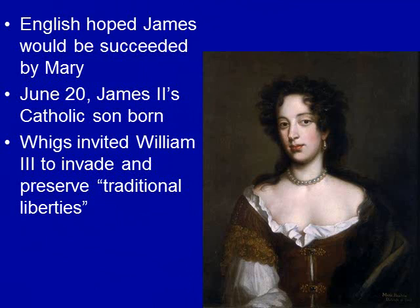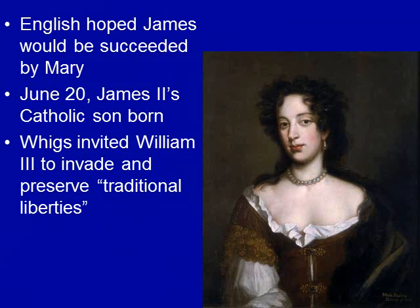The English had hoped that James would be succeeded by Mary. But on June 20th, James II has a son born by his Catholic wife, which is just too much for the Protestants in Parliament. Having dealt with religious conflicts involving kings and queens for quite some time, they want to end the problem — not by returning to Catholicism. So the Protestants in Parliament, especially the Whigs, invite William III (William of Orange) to invade from the Netherlands to preserve what they call traditional liberties.